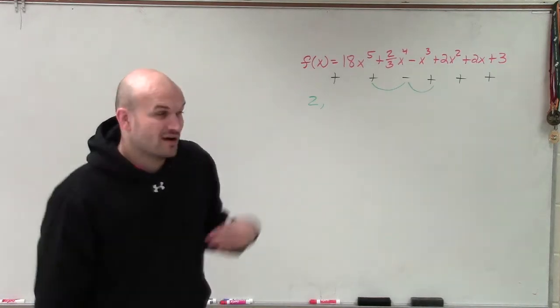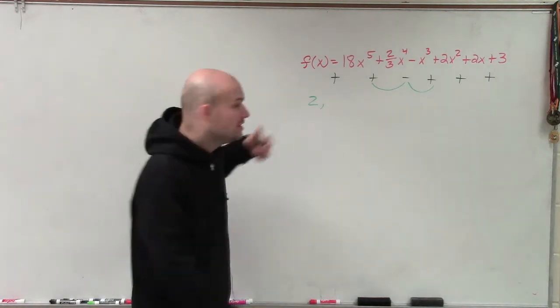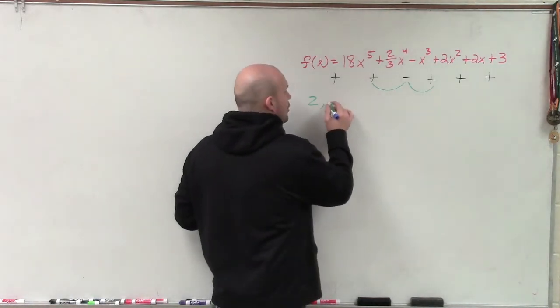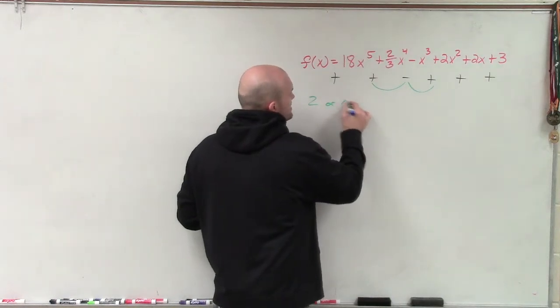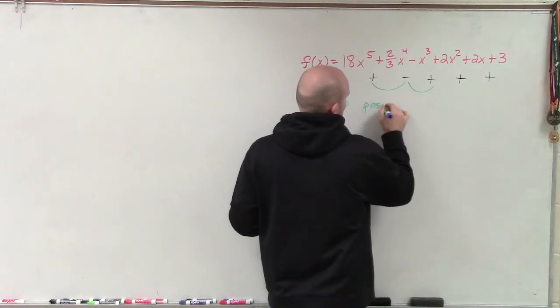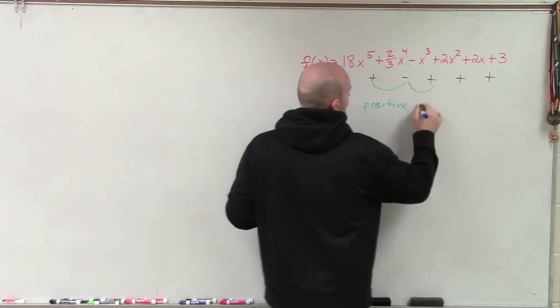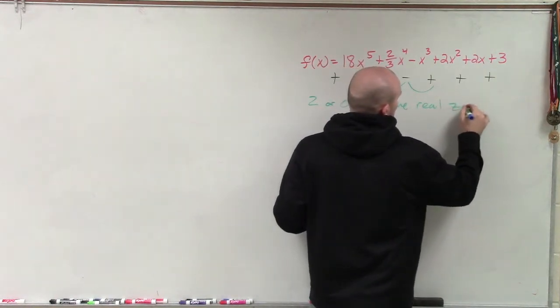So I have two, and then minus an even number. Well, think of your even numbers: two, four, six. I can't subtract anything greater than two, so it's either two or zero positive real zeros.